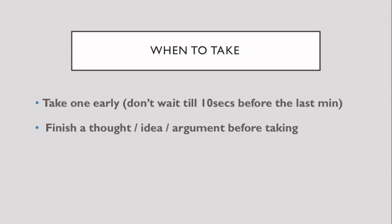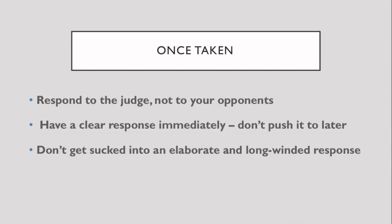You can even plan to take a POI only when you transition between argument one and argument two, or when you're moving from rebuttals to arguments. It is perfectly okay to make an opponent wait 20 to 30 seconds before taking their POI. If you disrupt your train of thought in order to answer a POI, you are never going to find your way back to where you were, leaving the argument incomplete. Do not stop talking to turn and respond to your opponent who is standing up — acknowledge that you know they are standing, finish the argument or sentence, and then go 'yes.' Remember to respond to the judges, not to the opponents.